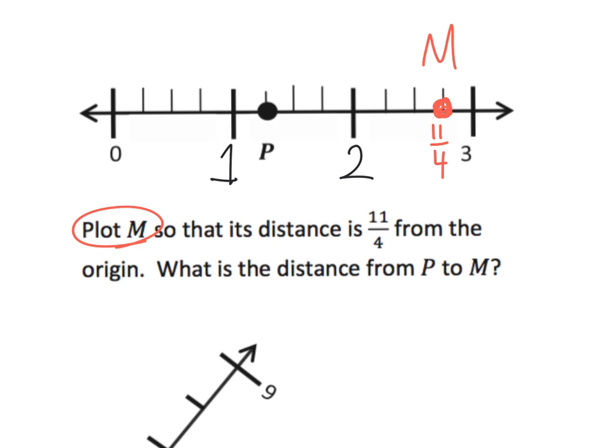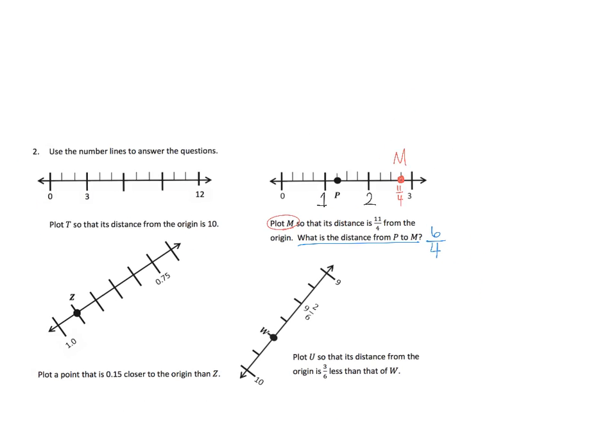And so, well let's go ahead and do it. It says what is the distance from P to M? So here's letter P, here's letter M, and we could count one-fourth, two-fourths, three-fourths, four-fourths, five-fourths, six-fourths. So the distance from the letter P to the letter M is six-fourths.